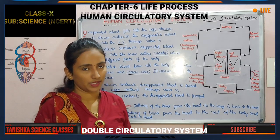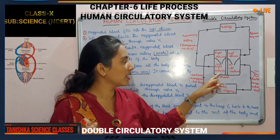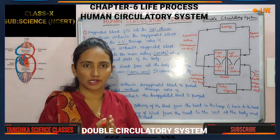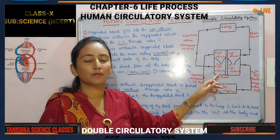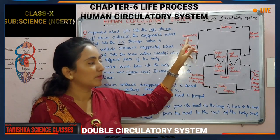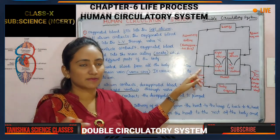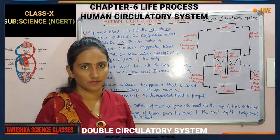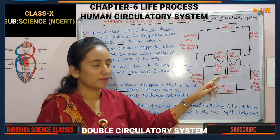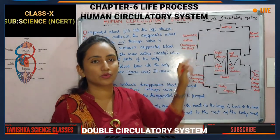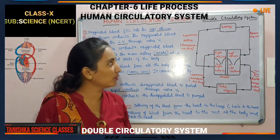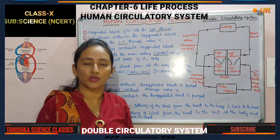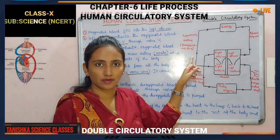Deoxygenated blood fills into the right atrium. The right atrium contracts, and when it contracts, blood is pushed down into the right ventricle through valve V2. The deoxygenated blood is now filled in the right ventricle. The right ventricle contracts and the blood is pumped into the pulmonary artery. That blood is transported through the pulmonary artery and goes to the lungs.